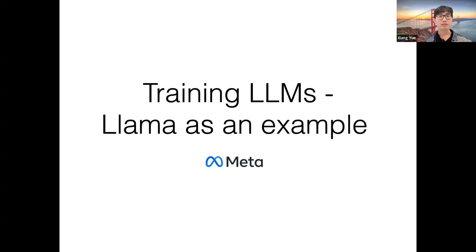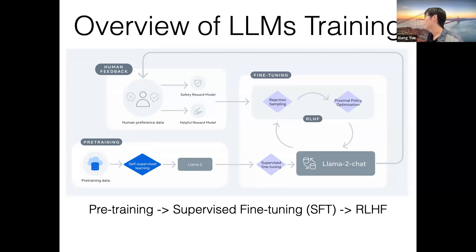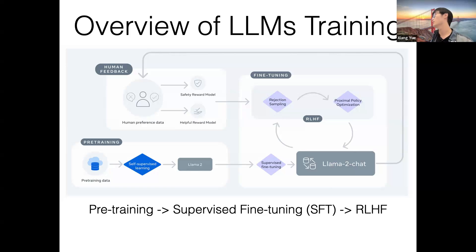To start this class, let's use LLaMA as an example, since it's a very important representative open-weights large language model. This figure, taken from the LLaMA 2 paper, gives an overview of typical large language model training. People classify training into three stages. The first is pre-training: we have a large pre-training corpus from the web, do next token prediction — self-supervised learning — and allow the model to learn to predict the next token. That gives us the base model.